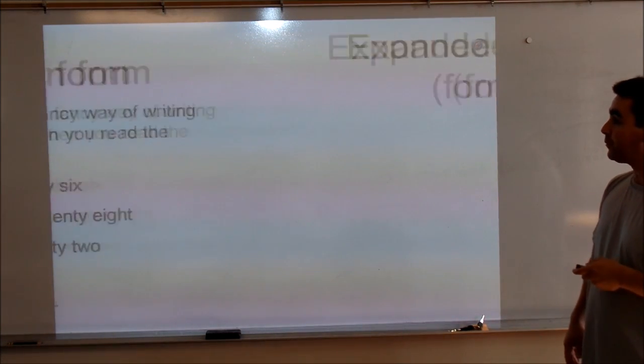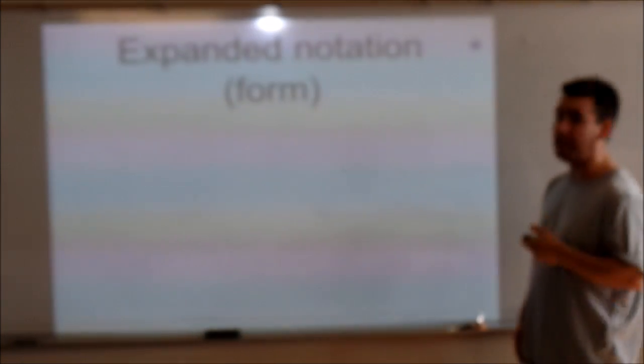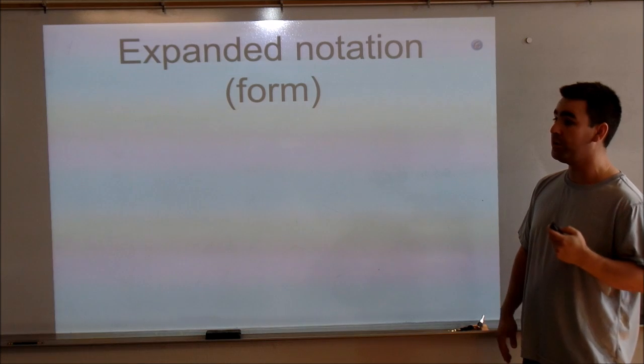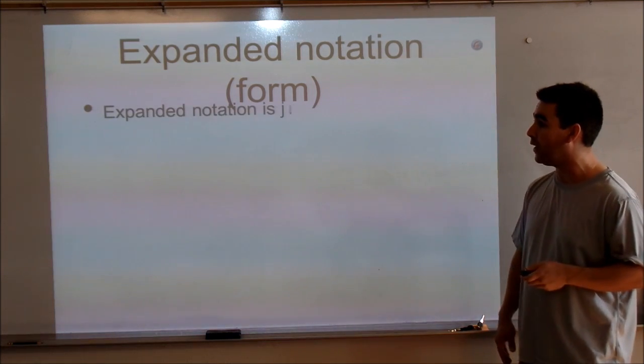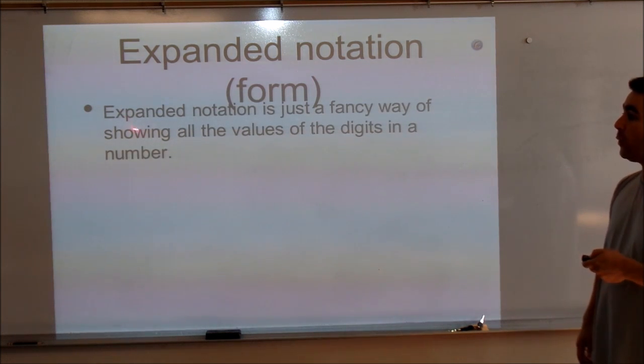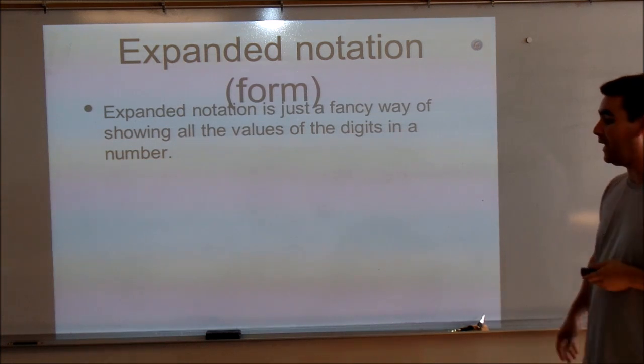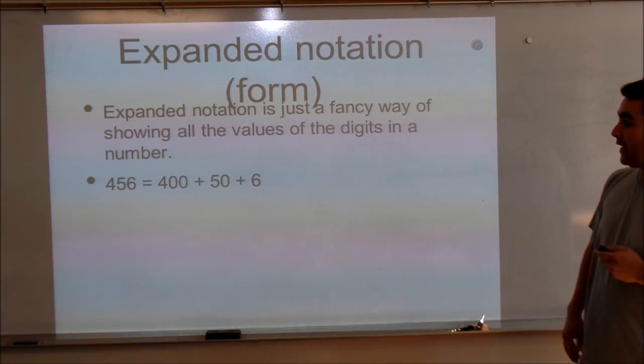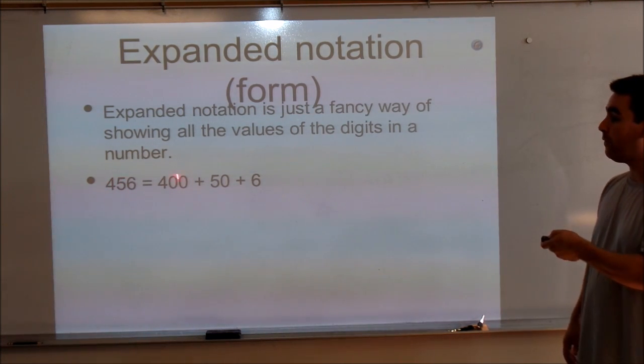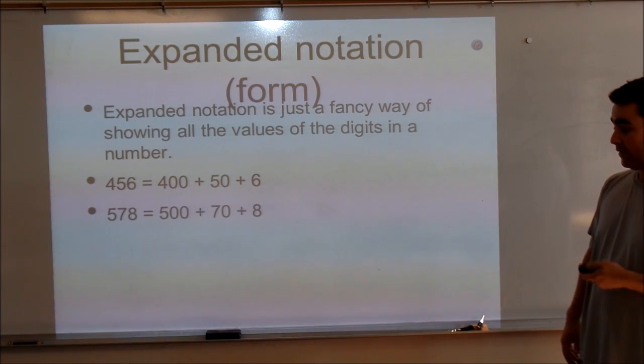All right. Now, moving on. Expanded notation. It's also called expanded form. And we're going to use the same numbers we used before. But what expanded notation or expanded form does, it's a fancy way of showing all the values of the digits in a number. So, once again, let's look at these same numbers. We have 456, which comes to 400 plus 50 plus 6.